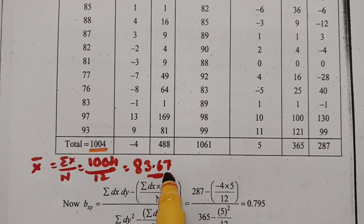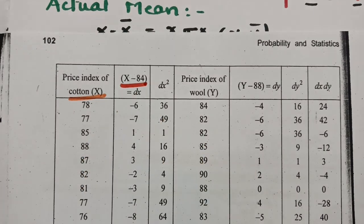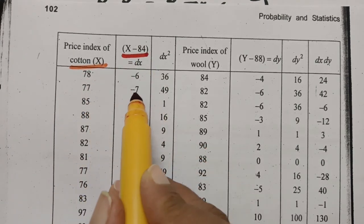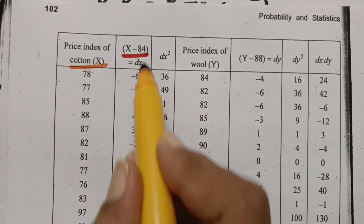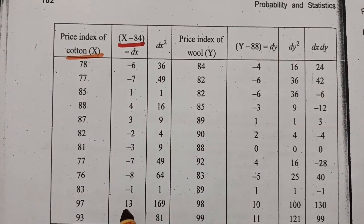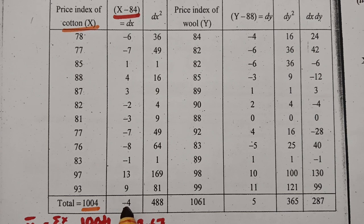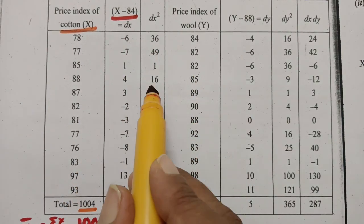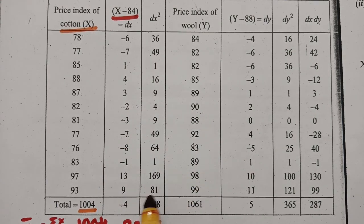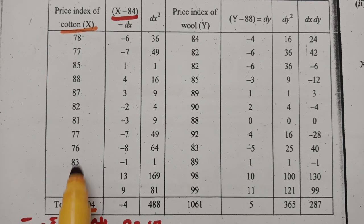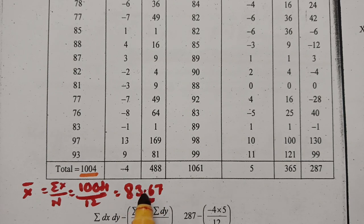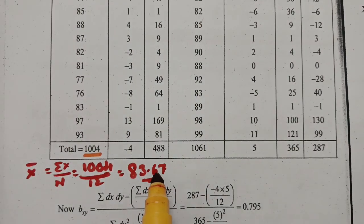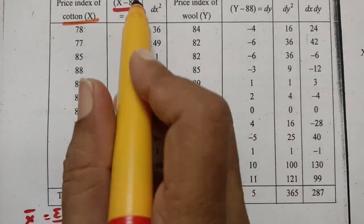We subtract 84 from each x value to get dx: 78 − 84 = −6, 77 − 84 = −7, 85 − 84 = 1, 88 − 84 = 4, 87 − 84 = 3, and so on. The total Σdx = −4. We then compute dx² for each value: (−6)² = 36, (−7)² = 49, 1² = 1, 4² = 16, 3² = 9, and so on.